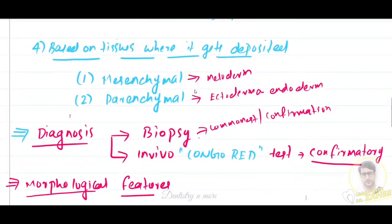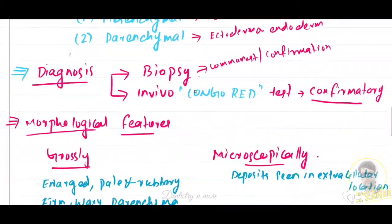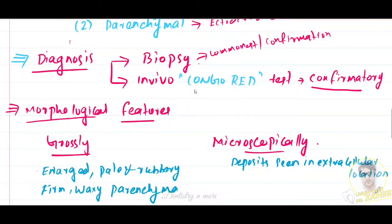Now let's see the morphological features. Different organs show variation in morphological pattern. Some features are applicable in general to most of the involved organs. Most commonly, the amyloid deposits appear at the contacts between the vascular spaces and parenchymal cells.